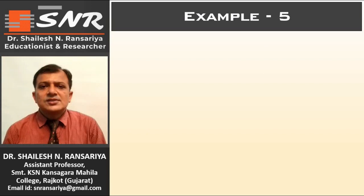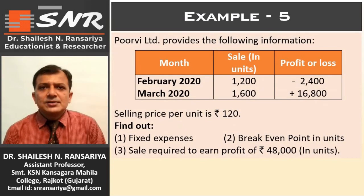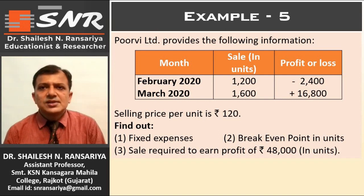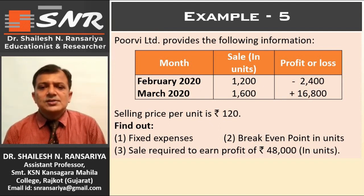See the example. Purvi Limited provides the following information. Month February and March: sales are given in units as 1200 and 1600. Profit and loss is given — in February it is minus 2400, showing a loss of ₹2400, and in March it is plus 16800, showing a profit of ₹16800. Selling price per unit is ₹120.